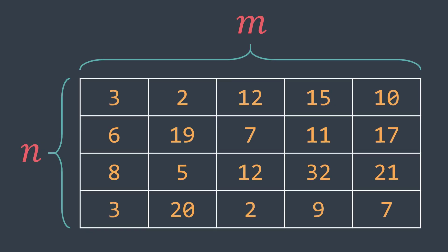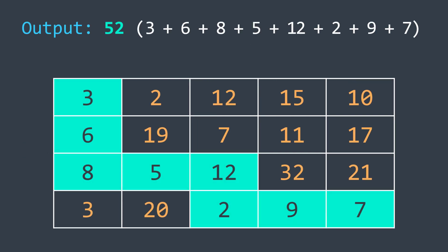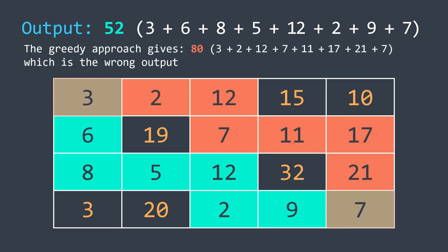The second problem we will see is the minimum cost path in a matrix. We have a matrix of size n by m where the value of a cell represents the cost of passing through it. We want to calculate the minimum cost to go from the top-left cell to the bottom-right cell, knowing that we can only move right or down. The cost of a path is the sum of costs of all the cells it passes through. An intuitive approach is the greedy approach — always choosing the cheapest cell — but this doesn't always give the right answer. Always choosing the cheapest cell doesn't guarantee the minimum cost path.